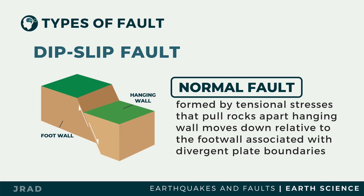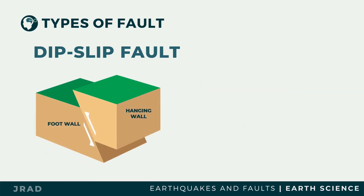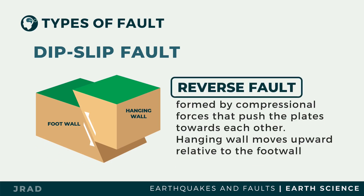In portions of the crust where there is tension, the two blocks move apart. As the separation progresses, a point is reached where the hanging wall suddenly drops. In contrast, if the blocks of rock are subjected to compression, the two blocks are pushed toward and against each other. The forces and movements are the opposite of those in a normal fault.